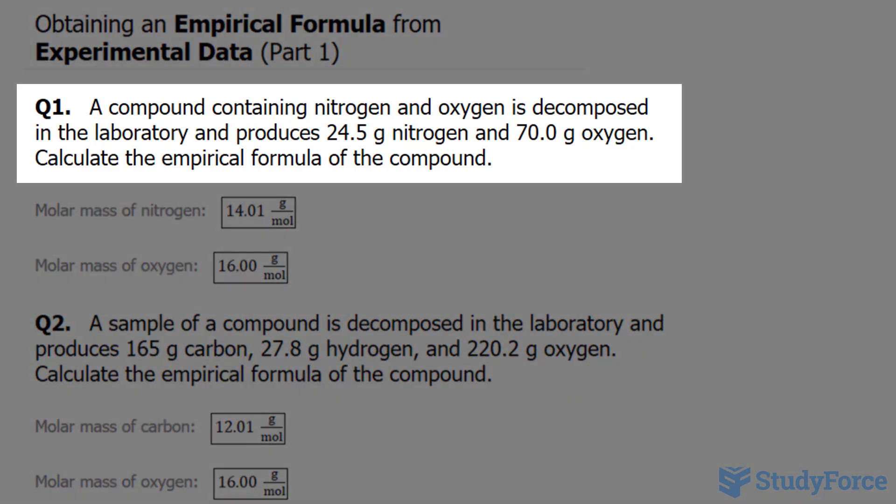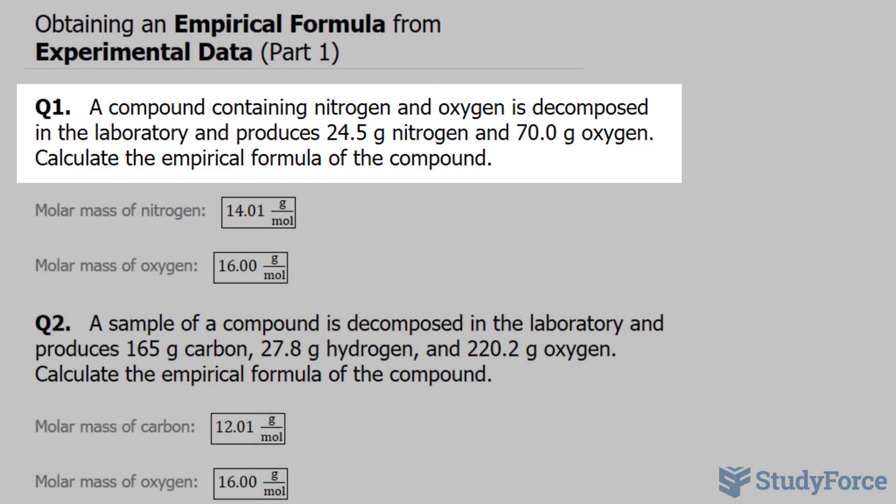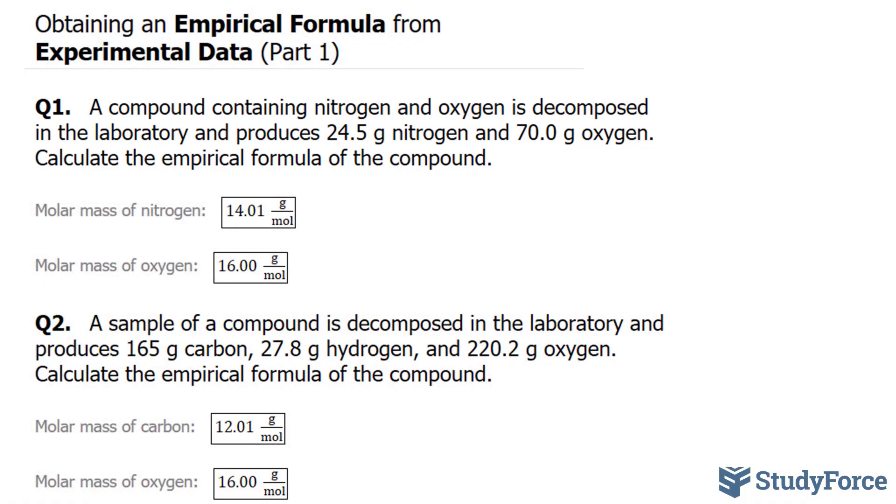The question reads, a compound containing nitrogen and oxygen is decomposed in the laboratory and produces 24.5 grams nitrogen and 70.0 grams oxygen. Calculate the empirical formula of the compound. What's nice about this question is that they've provided the molar mass of both nitrogen and oxygen, so we can use that to find the number of moles.